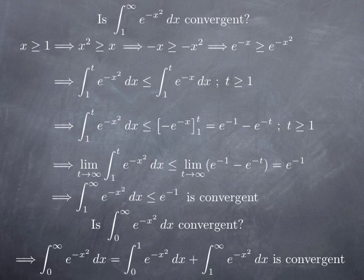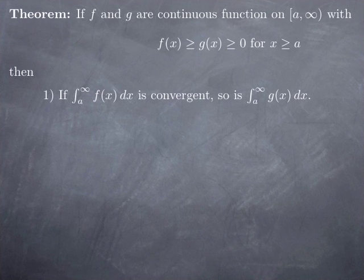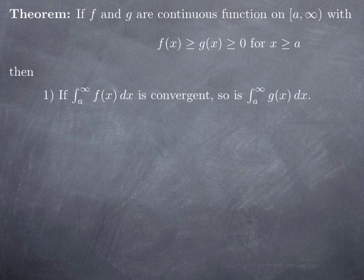Now let's generalize this method of comparing functions in order to reach conclusions on convergence or divergence of an improper integral. Suppose we have two continuous positive functions f and g on an unbounded interval from a to infinity, where f is greater than or equal to g. Then if the integral of the larger function f is convergent, the integral of the smaller function g is bounded above by the integral of f and therefore is also convergent.